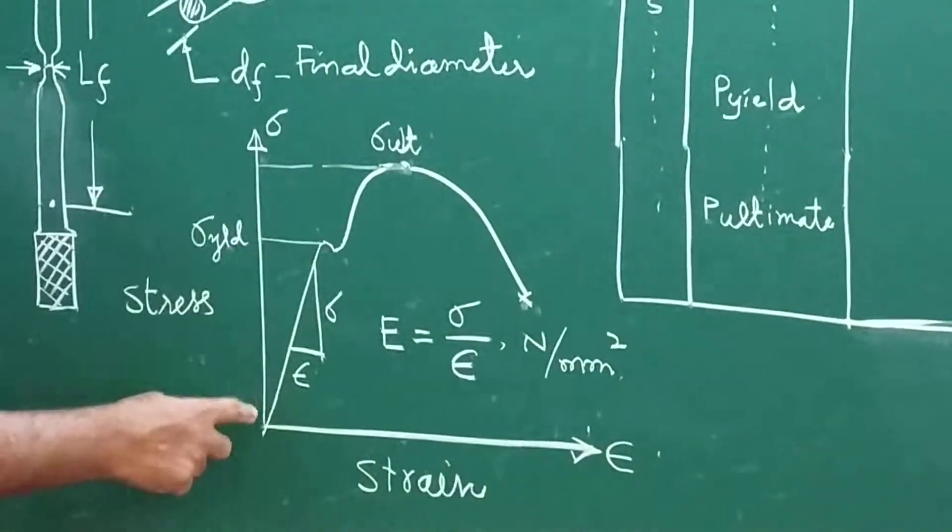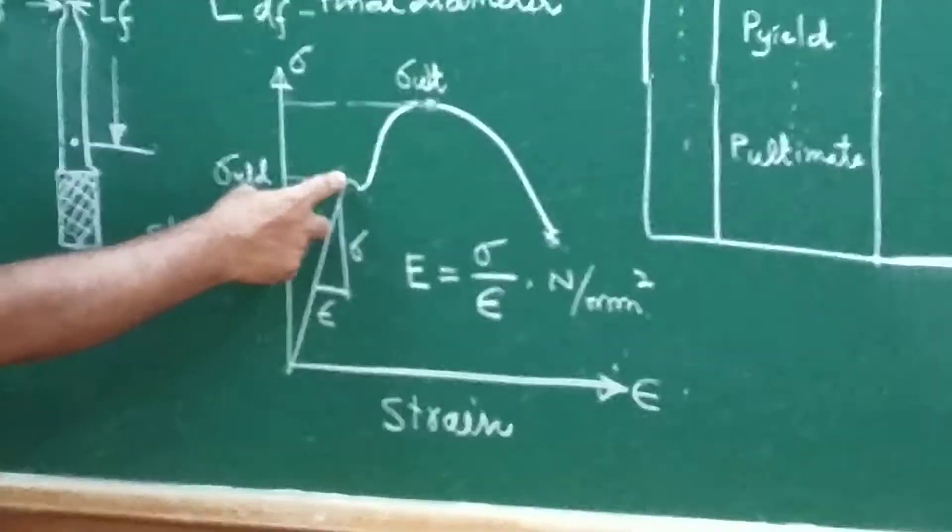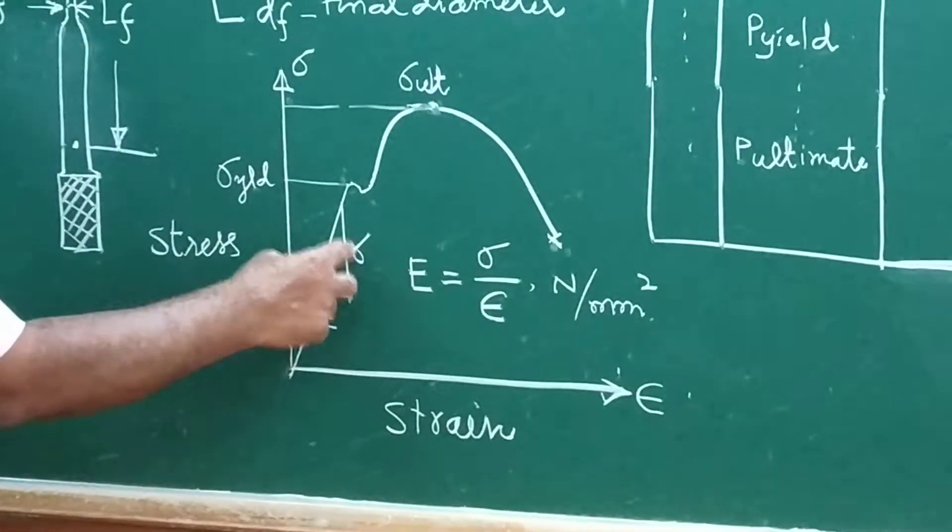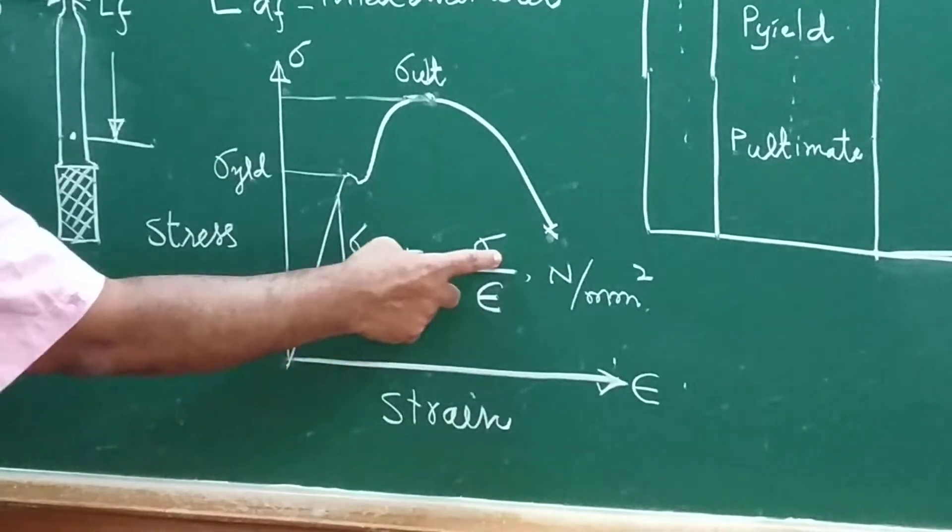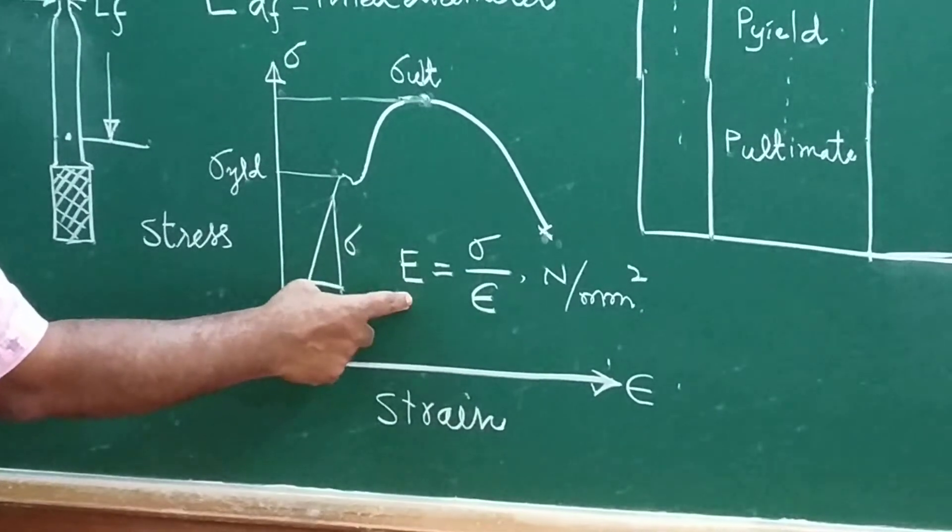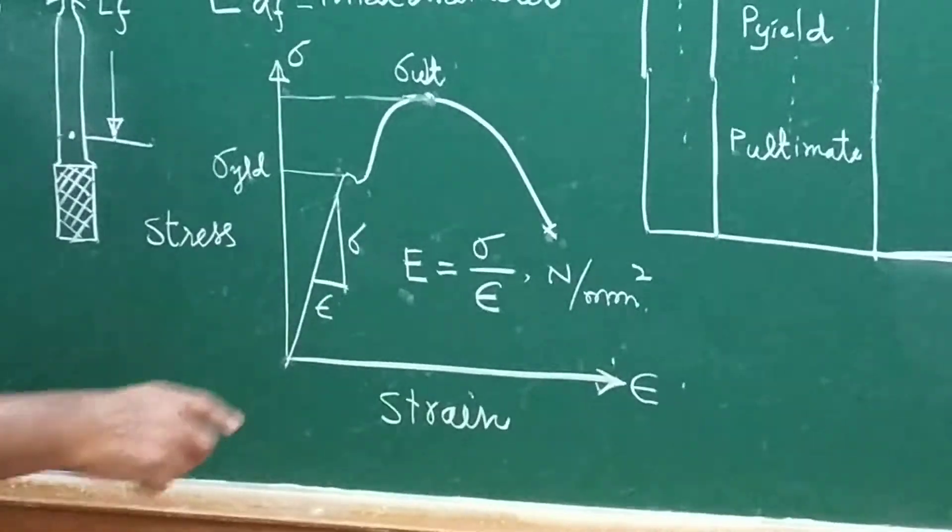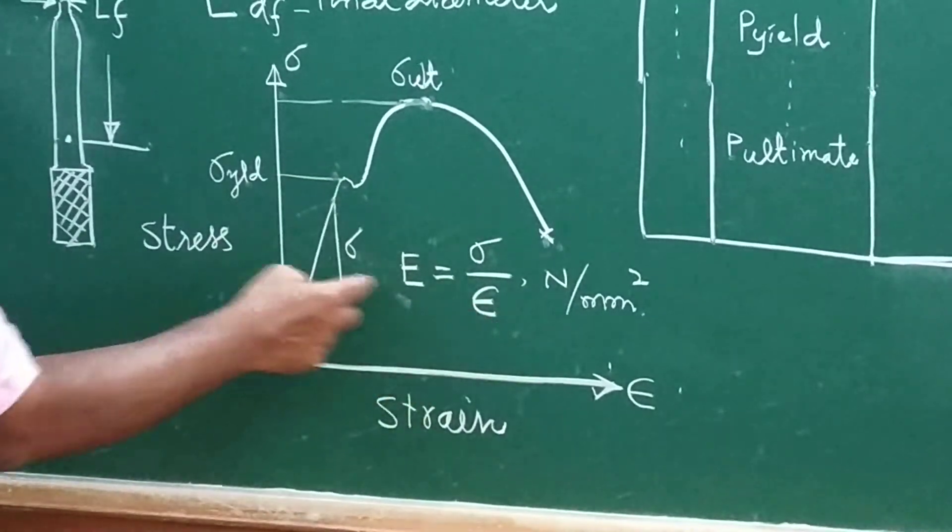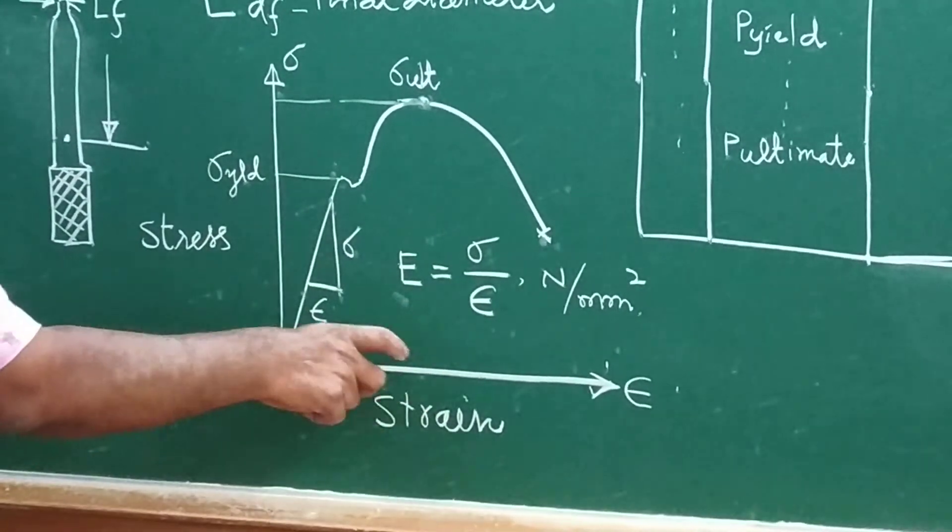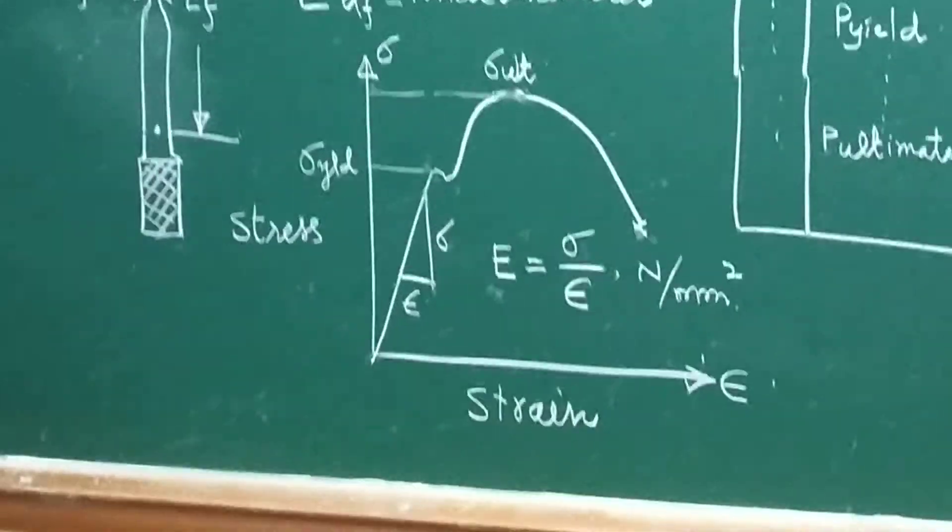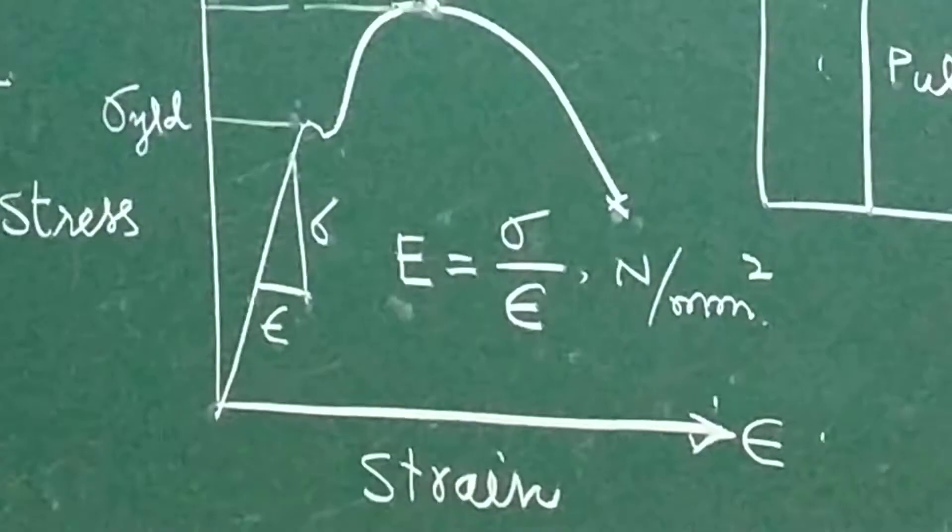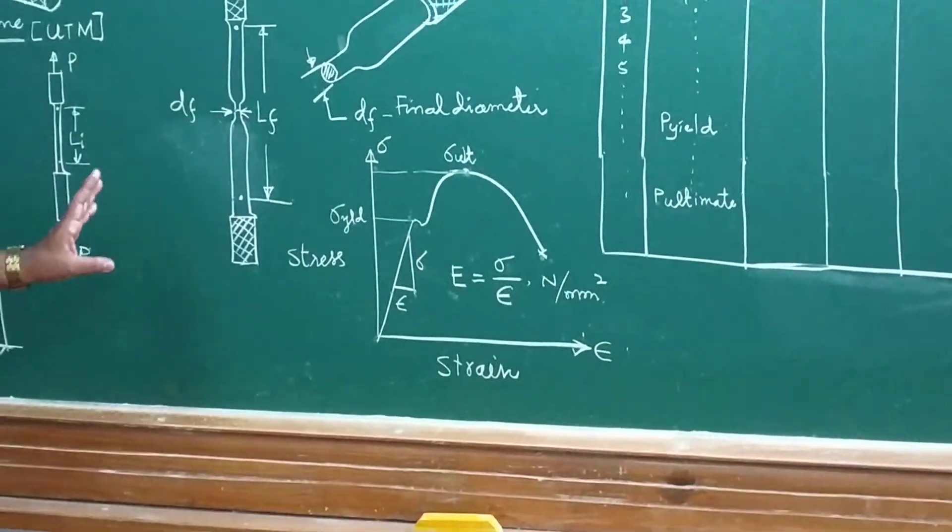On this straight portion, which is drawn from origin to yield point, you need to find the slope of this line. That is σ by ε. This will give the Young's modulus of the mild steel. That is stress divided by the corresponding strain. You have to use proper scale on x-axis and y-axis, then find out the elastic modulus.